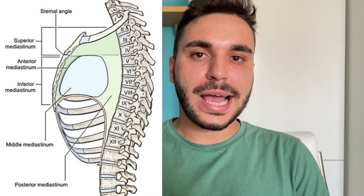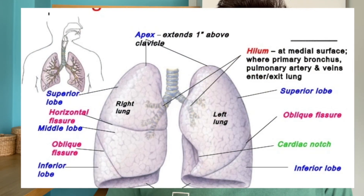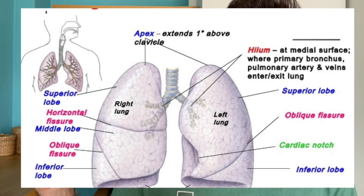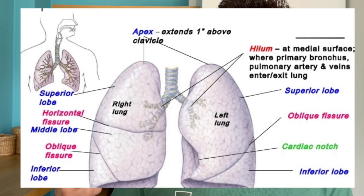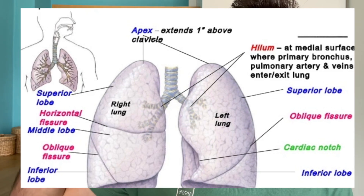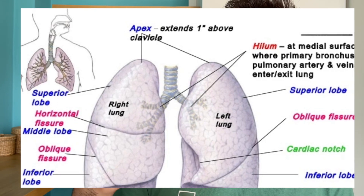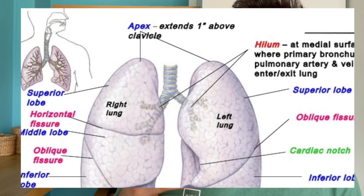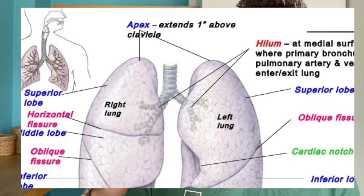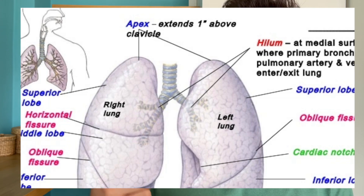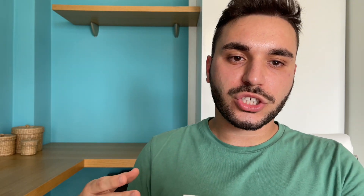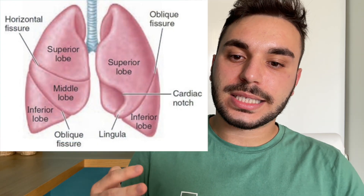Regarding the lungs, we have some basic and very important anatomical marks. We have the base, which rests on the diaphragm. We have the apex, which extends above the clavicle. We have the hilum — very important because the primary bronchus and the pulmonary arteries and veins enter and exit the lung from here. And we have also the root.